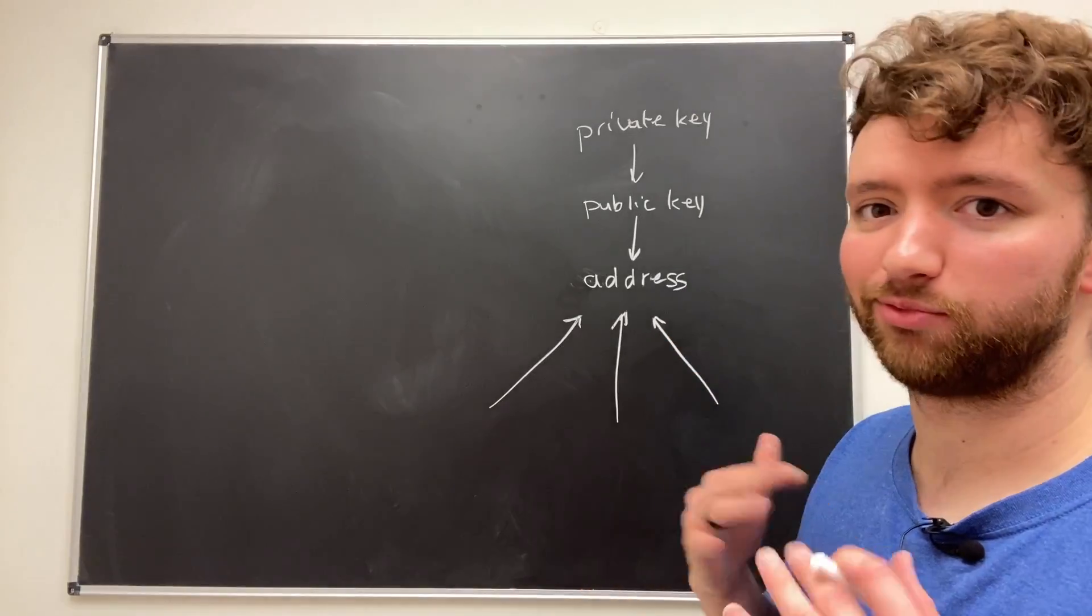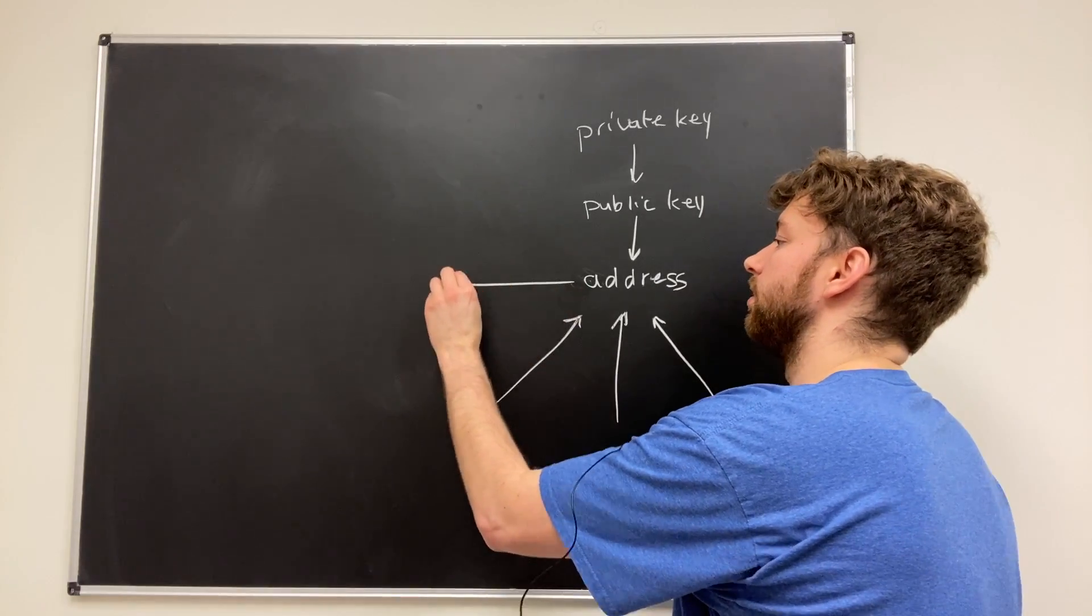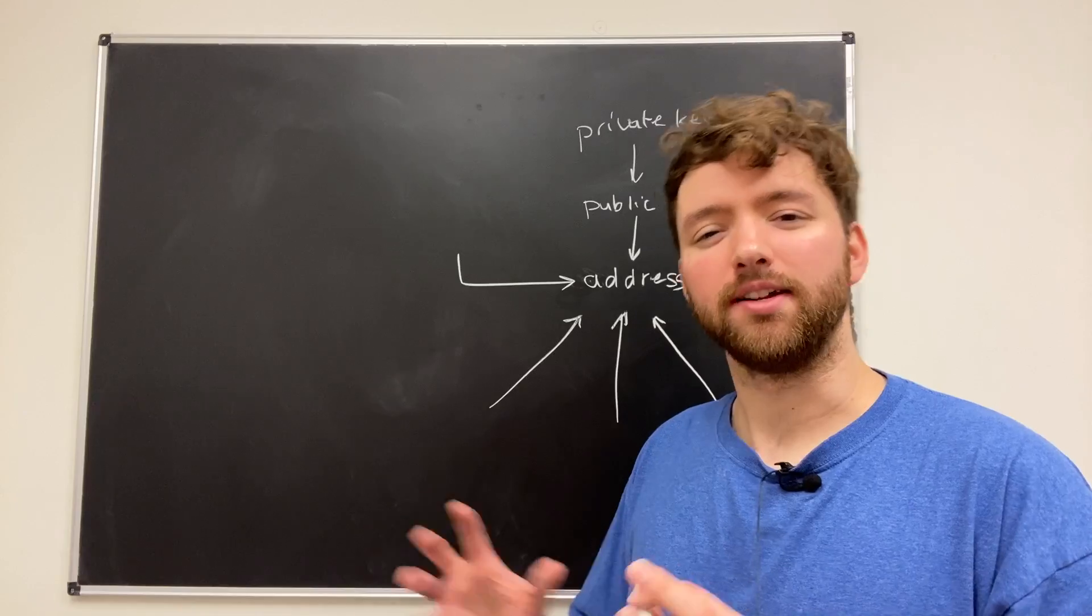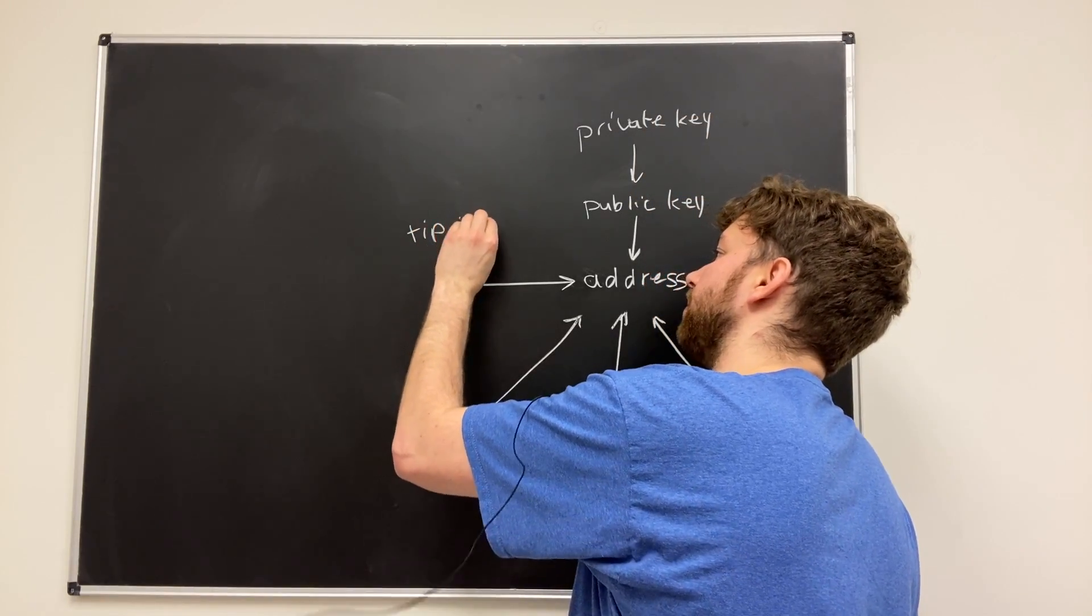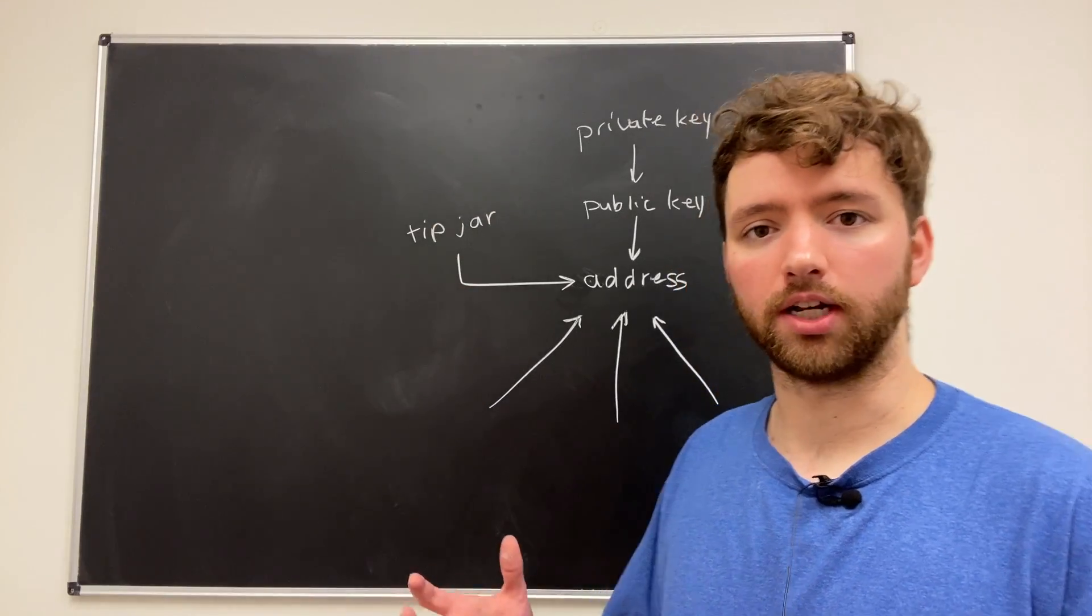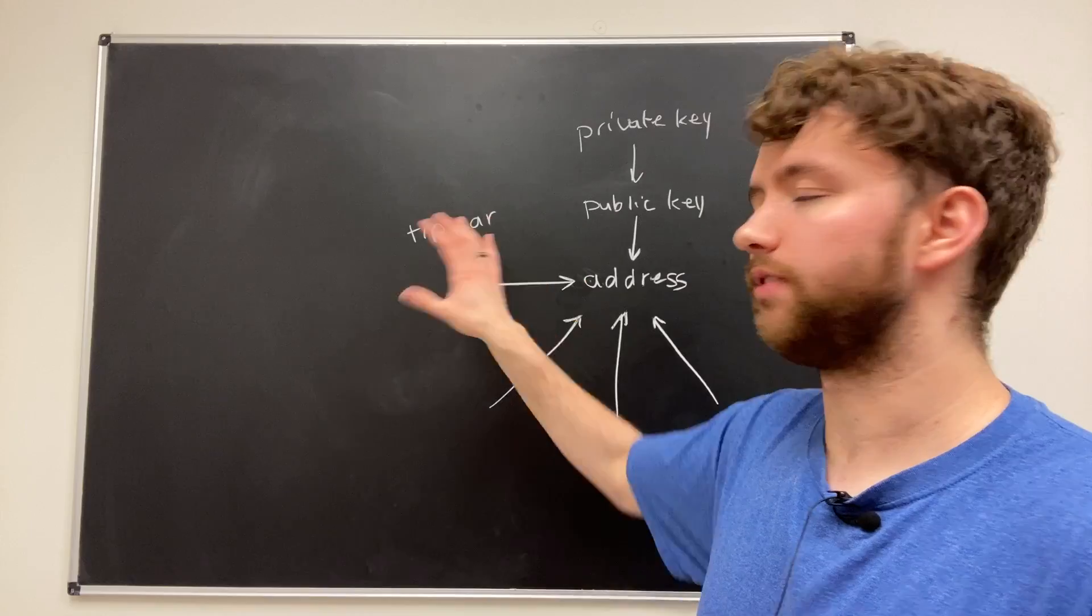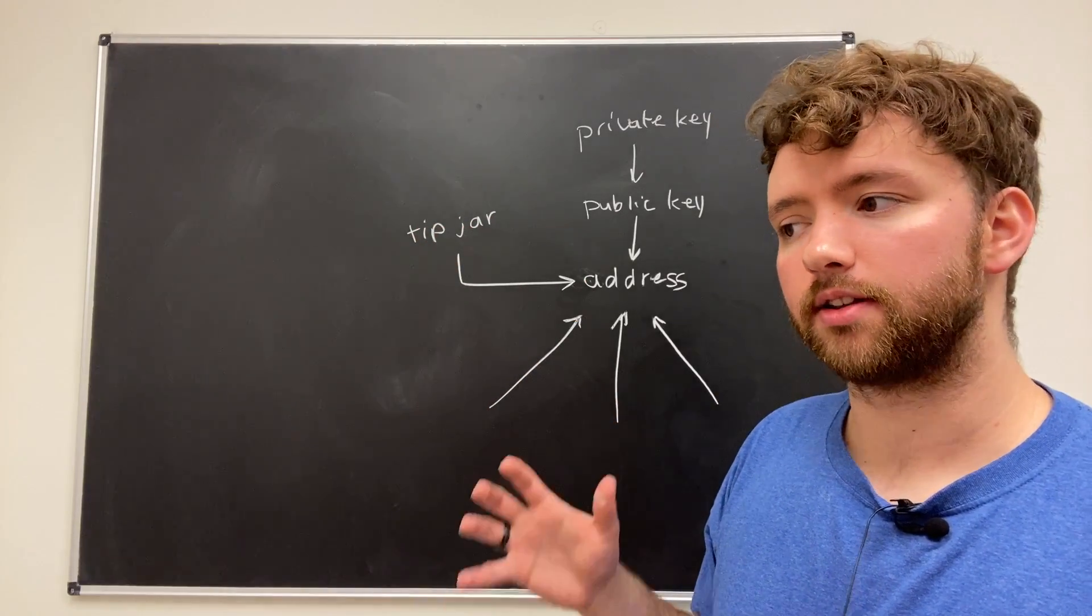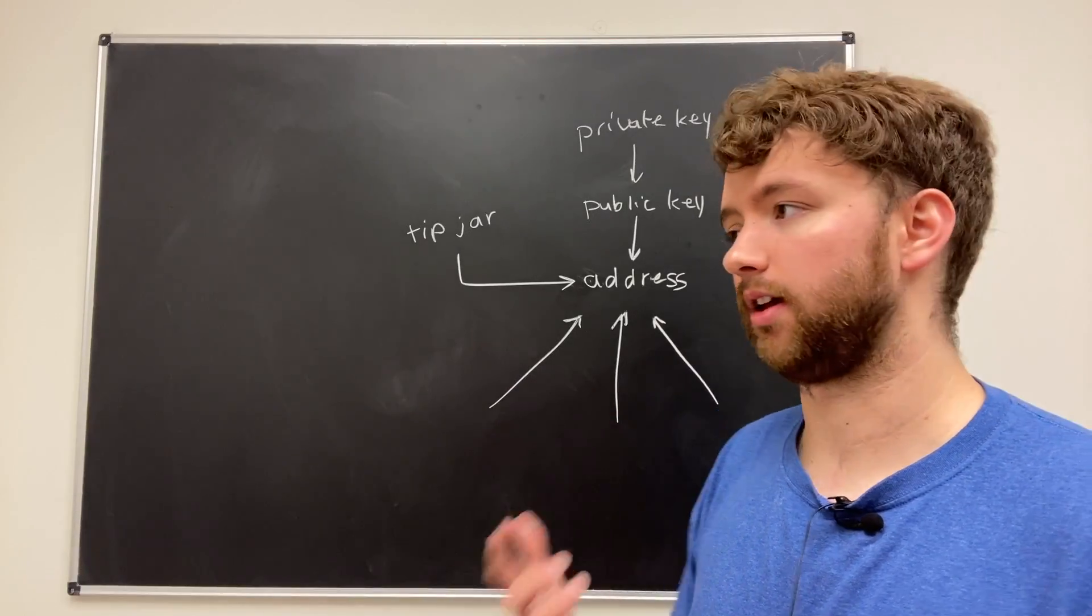You know, if someone buys illegal drugs or does something with Bitcoin that they should not. And there's basically a paper trail that leads back to you, right? So that is more likely to happen if you're reusing addresses. Now, don't tell anyone, but some people break the rules here. I actually break the rules here because a common thing to do is to basically create a tip jar, right?